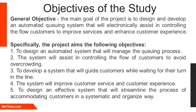The specific objectives are: 1. To design an automated system that will manage the queuing process. 2. The system will assist in controlling the flow of customers to avoid overcrowding. 3. To develop a system that will guide customers while waiting for their turn in line. 4. The system will improve customer service and customer experience. 5. To design an effective system that will streamline the process of accommodating customers in a systematic and organized way.